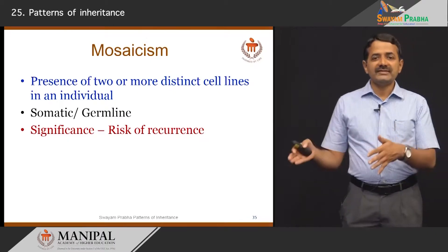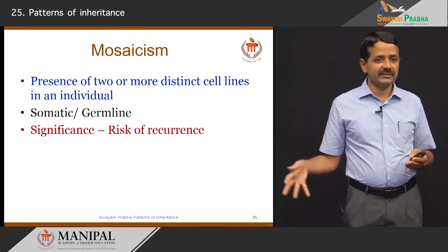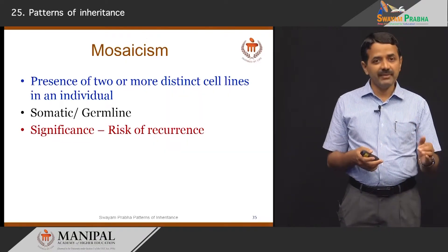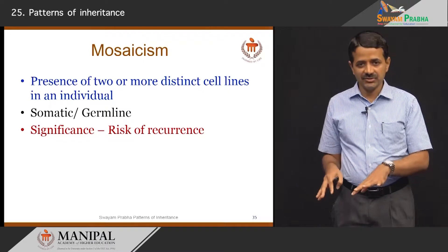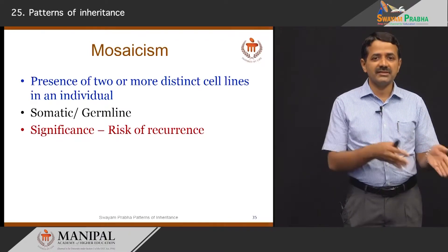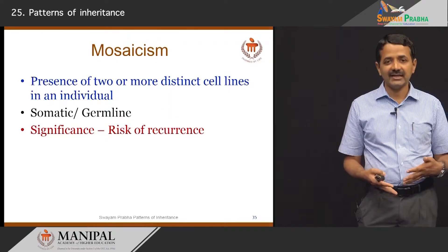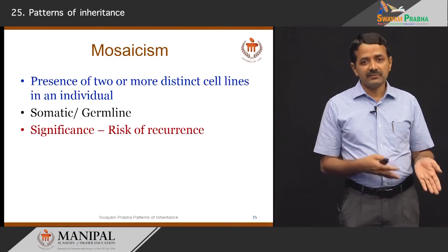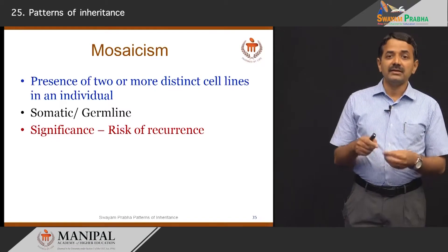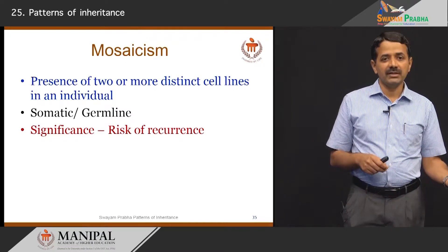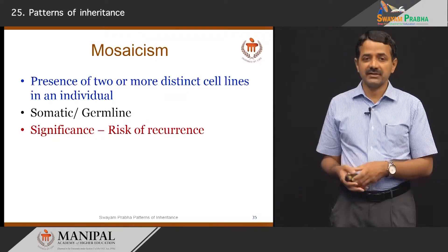Mosaicism refers to the presence of two or more distinct cell lines in an individual derived from the same zygote. It can be somatic — present in different tissues or organs — or germline, where it is present in the gonads. In somatic mosaicism, some cells carry mutations and some do not, resulting in mosaic patterns such as skin pigmentation abnormalities, vascular abnormalities, syndactyly, or differential growth. If mosaicism occurs in the gonads, some children may be normal and some abnormal even if the parent appears unaffected, because there is a risk of transmitting the mutation to offspring.